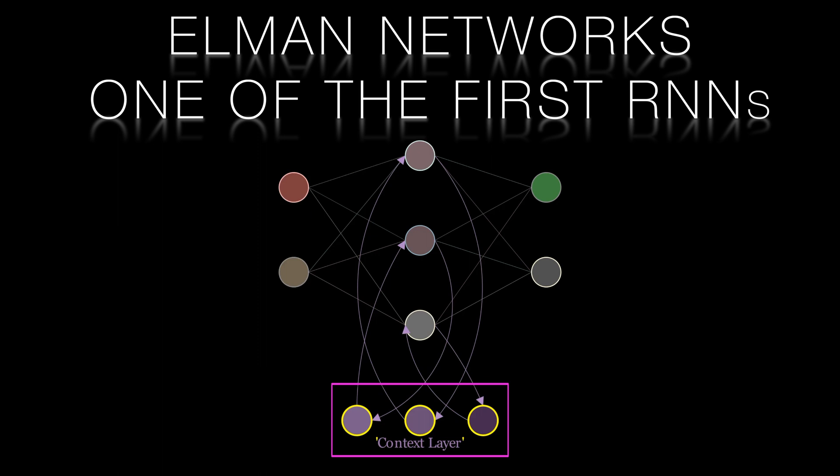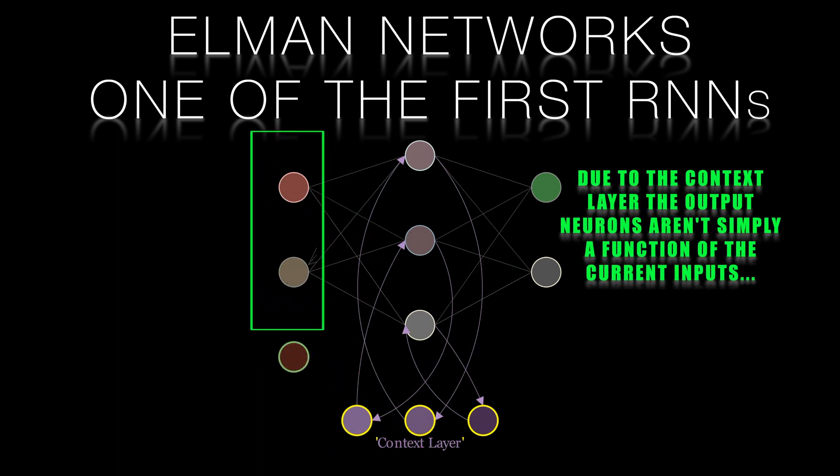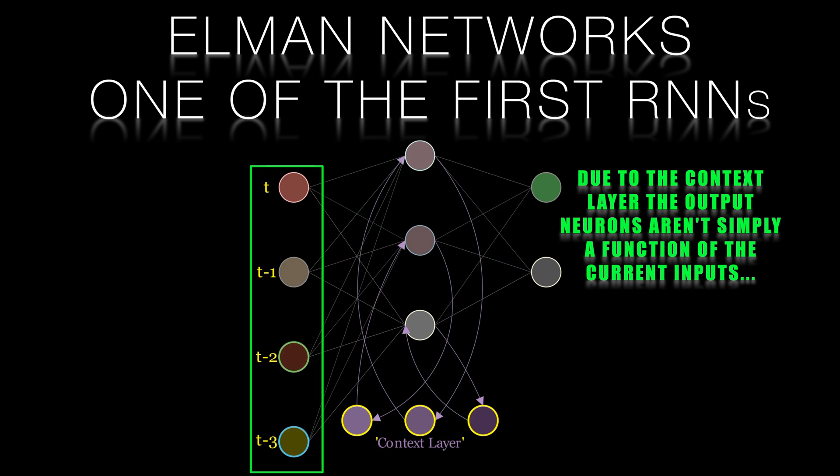Unlike simple feedforward networks, the Elman model isn't simply relying on the input data as it makes its predictions. The memory contains information from all the prior inputs. This memory is what makes it suitable for tasks involving sequences.